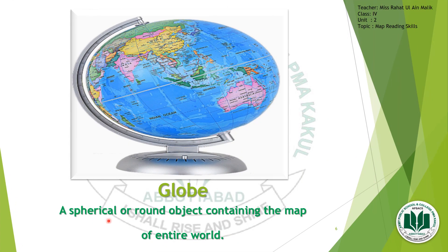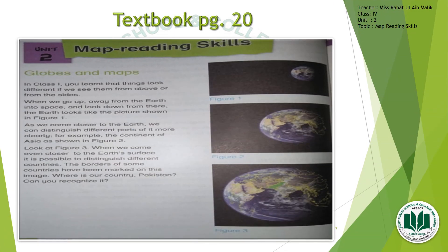Now, what is a globe? A globe is a spherical or round object containing the map of the entire world. As discussed, a globe is different from a map in that it is spherical. This is like the shape of the Earth — round and spherical. You can see the entire world depicted on this particular globe. So it is also a map, but you would say it is a round map.